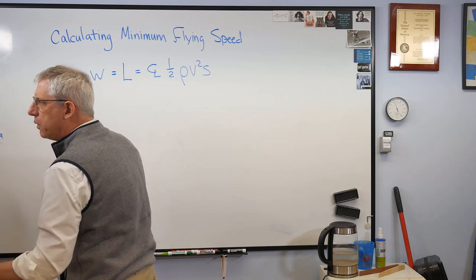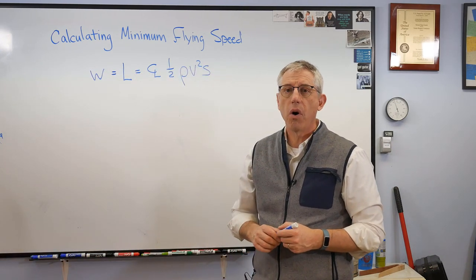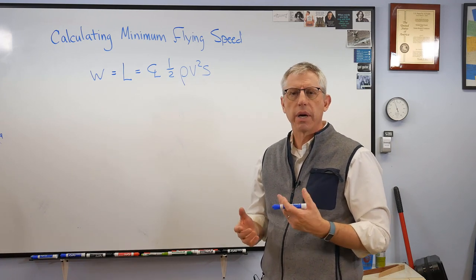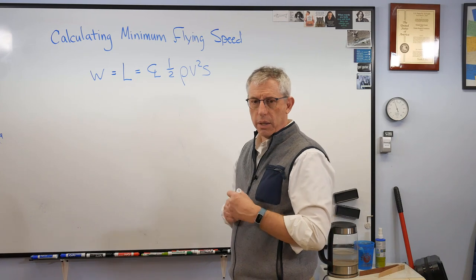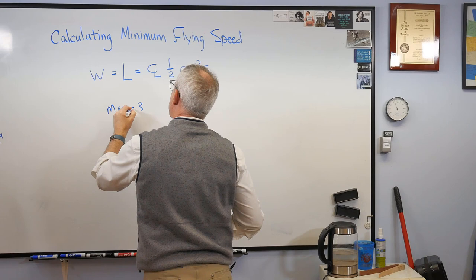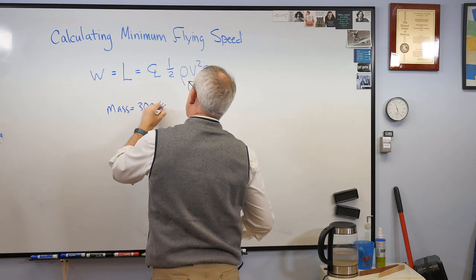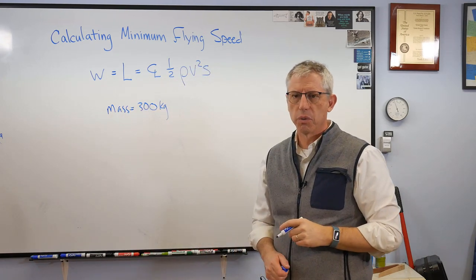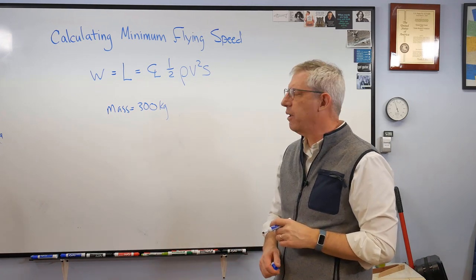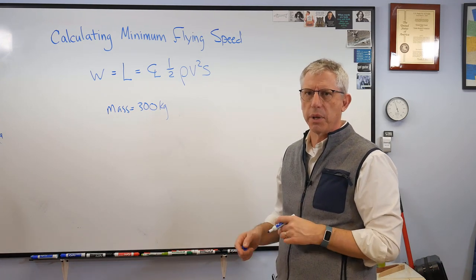All right. So let's run some numbers here real quick. Let's take a very small kind of single seat airplane, little sport plane maybe, maybe the kind a home builder would make. And so let's look at a mass of 300 kilograms, which is 661 pounds. We're definitely doing this in metric units. Mass of 300 kilograms is a pretty small plane, but there's plenty out there like that. I'm looking forward to building one someday.